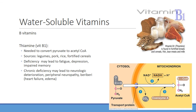Many foods are fortified with thiamine because deficiency is a known problem. Chronic issues include problems with energy production, fatigue, impaired memory, and neurological changes especially with glucose utilization in the brain. Chronic deficiency can lead to neurologic deterioration, peripheral neuropathies with paresthesias or tingling in the fingers and toes. There's also a condition called beriberi, which involves vitamin B1 deficiency and can include heart failure and edema.